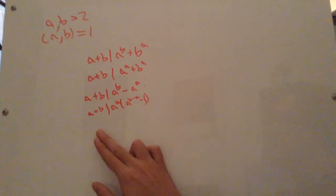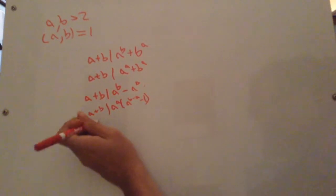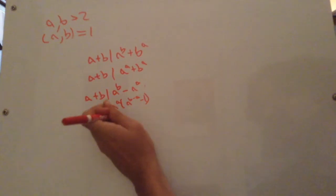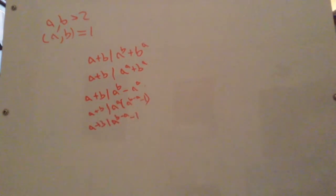So we know that a to the a is not divisible by a plus b, which means if this is going to be true, we need a plus b divides a to the b minus a minus 1.